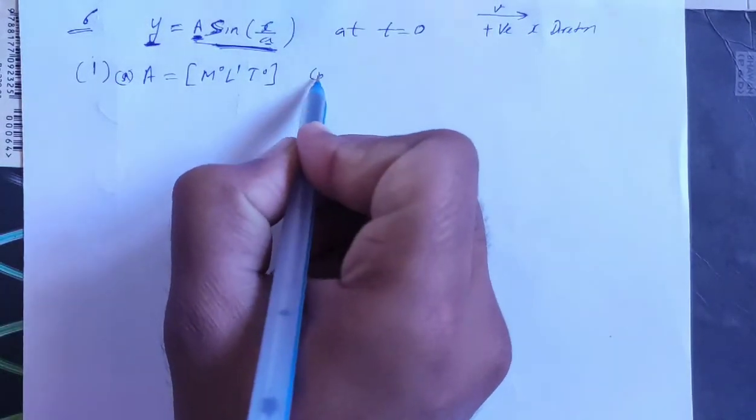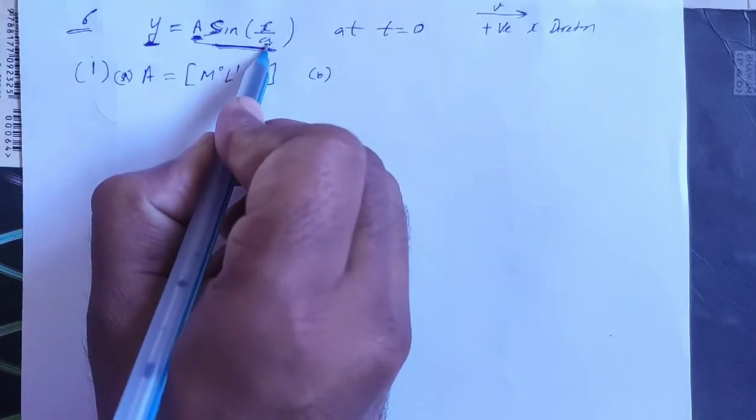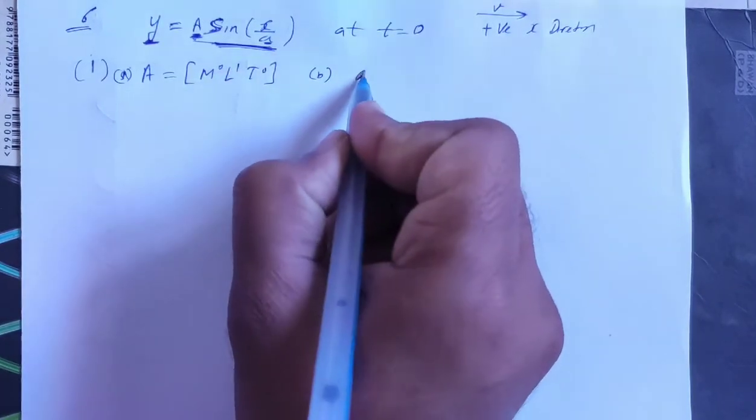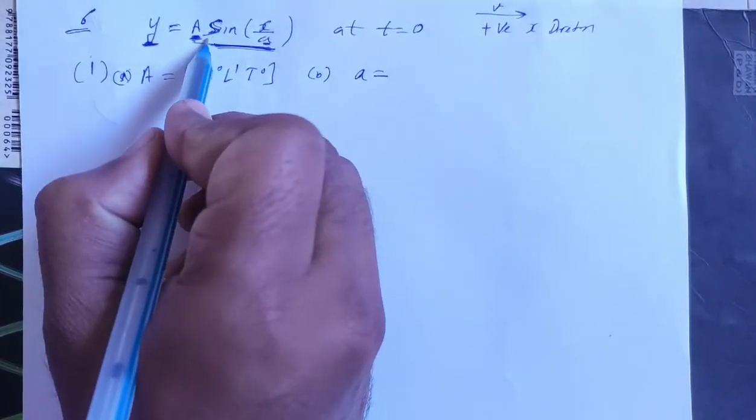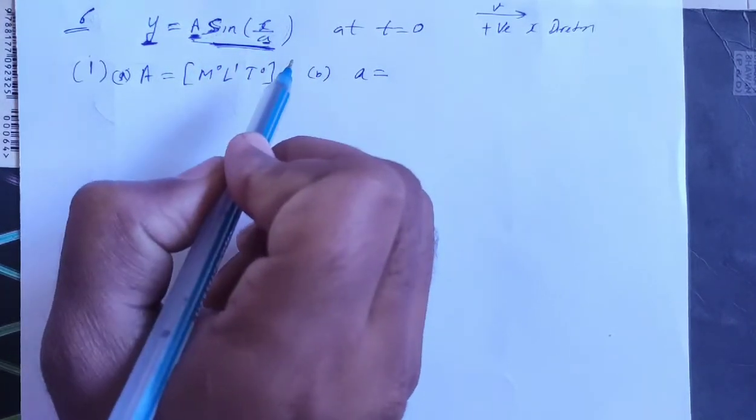And b, which is the dimension of small a. Small a dimension - see, sine function inside the length is dimensionless.